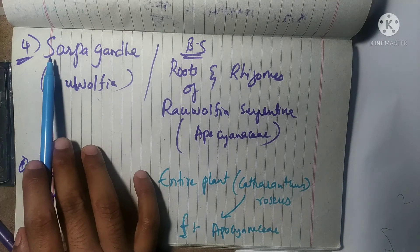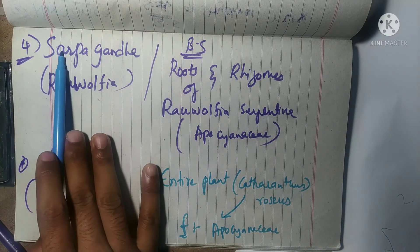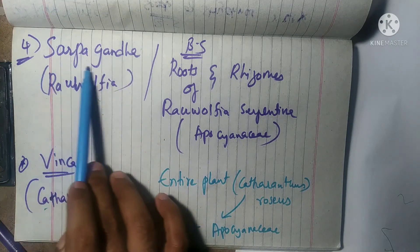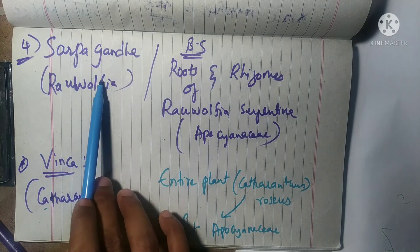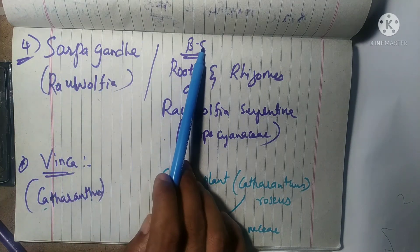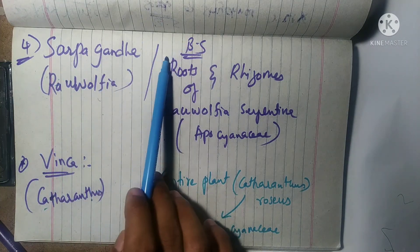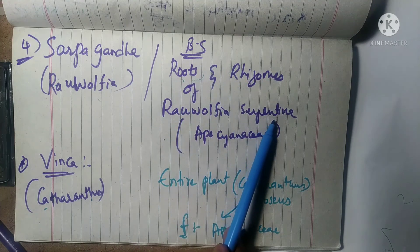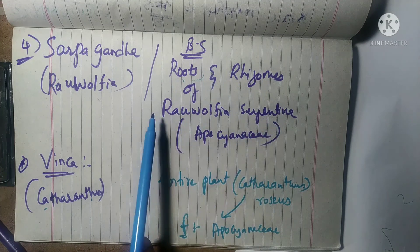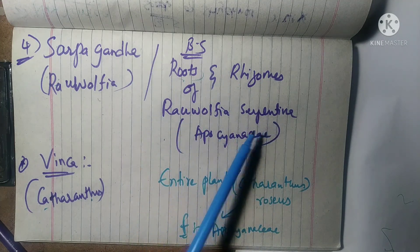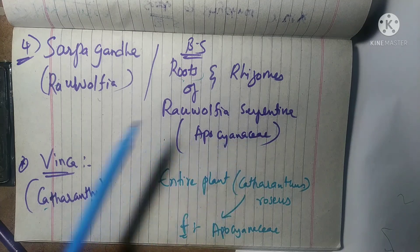Next is Sarpagandha. Its synonym is Rauwolfia, and its biological source includes roots and rhizomes of Rauwolfia serpentina. Its family includes Apocynaceae.